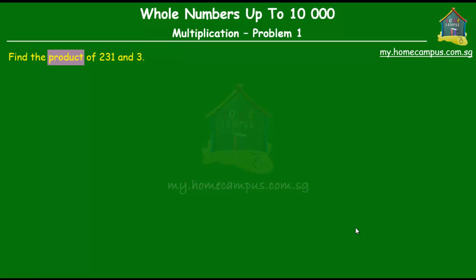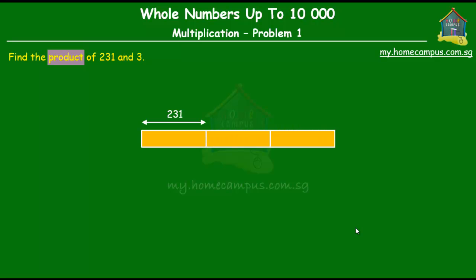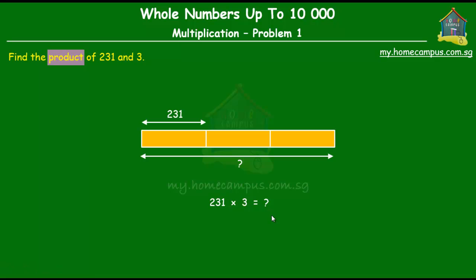On our model diagram, if this unit represents 231, then what we have to find out is how much three times of this unit would be. Three times of this unit gives us three of those units altogether, so the product of 231 and 3 is 231 times 3.